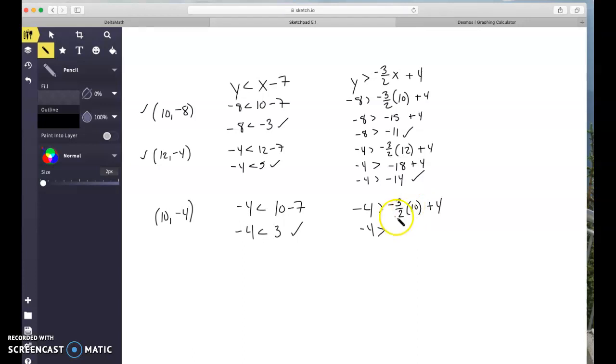So 10 divided by 2 is 5 times negative 3 is negative 15 plus 4. Let's see here. Negative 15 plus 4 is negative 11. Negative 4 is bigger than negative 11. So it's also a true statement. All right, so hopefully this last point is going to be the one that is not part of our solution to our system of equations. So we've got 0 and negative 7. All right, so negative 7 is less than 0 minus 7. Is negative 7 less than negative 7? Ugh, technically that is not a true statement, right? Negative 7 is equal to negative 7, not less than it. Let's test the other equation just to be thorough.